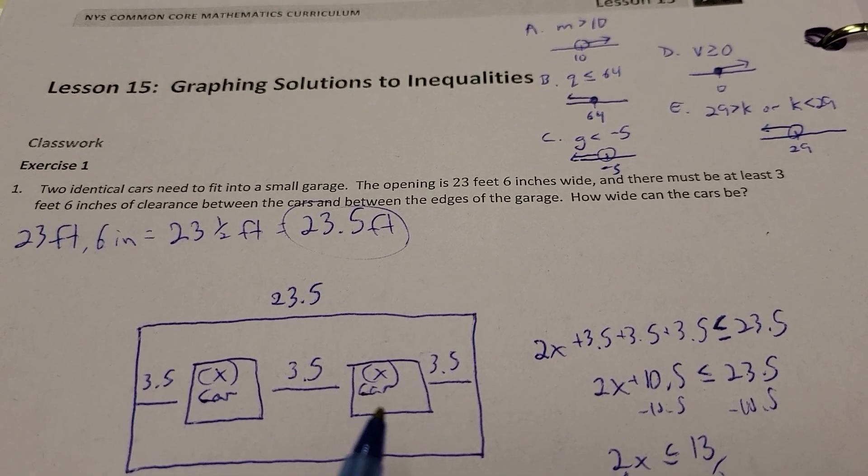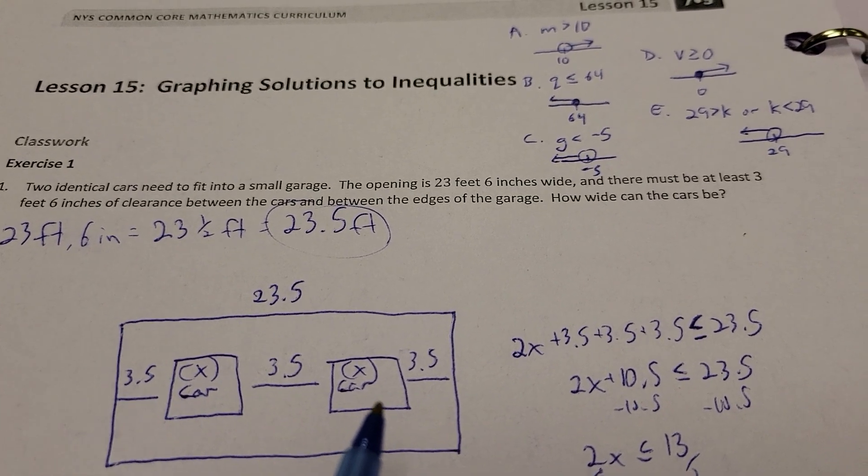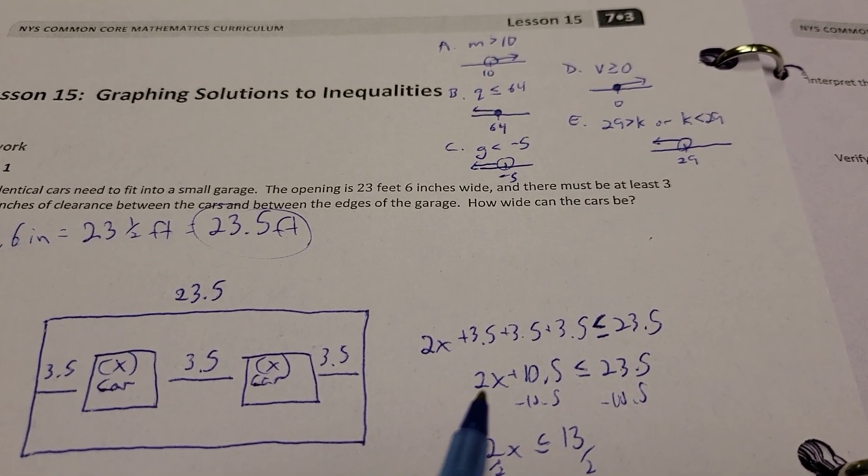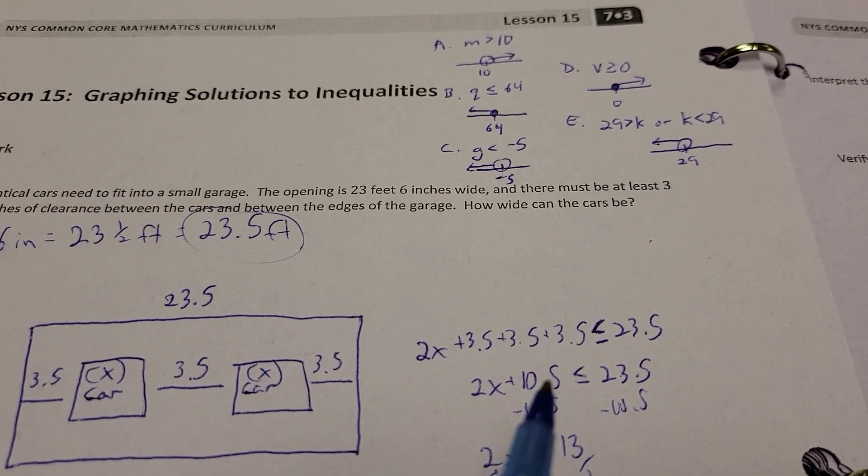So, the whole distance is 23.5, and they want some 3 and a half foot or 3.5 foot spaces between the cars and then the walls. So, the car, I don't know how big they are, but we're going to call that X. Alright, so I have two X's plus all those 3.5's.